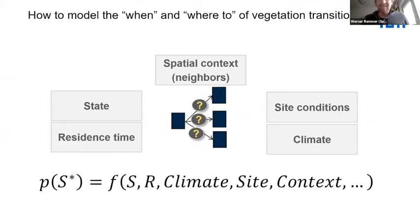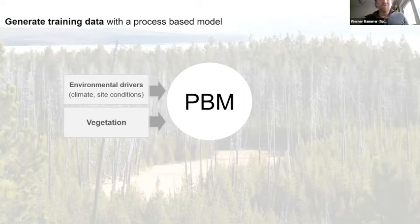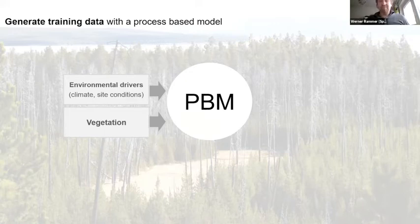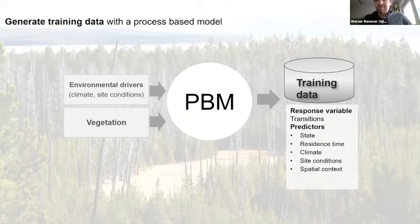Back to SVD — in our case, deep learning networks are used for predicting transition probabilities between states. A crucial point is where the training data comes from. We use process-based models at the lower scale to generate training data that is then used to train the networks. You take environmental conditions (climate, site conditions), take vegetation, put it into a process-based model, run simulations, and from those simulations derive training data. The response variable is the transitions, and the predictors are all the factors described — climate, site, spatial context, and so on.